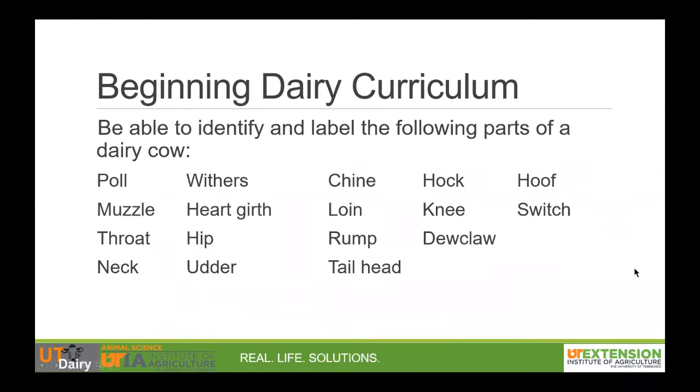Dairy cattle have over 40 external body parts that we can label, but for the beginner dairy curriculum we will focus on 17.